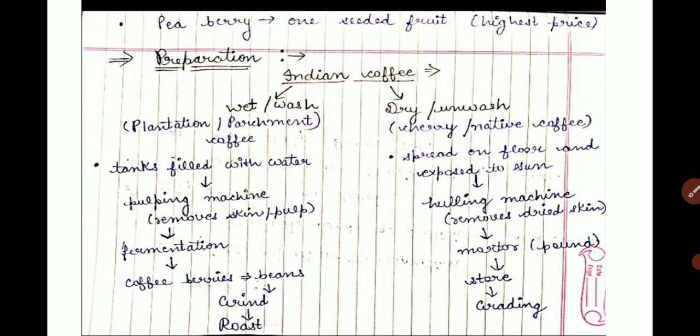For the dry or unwash method: dry berries are spread on the floor and exposed to sun. The outer skin, parchment cover, and pulpy matter dry up to form a husk-like covering. The berries are then passed through hulling machines to remove the dried skin and pulp. Finally, the beans are pounded in a mortar to remove the parchment, and graded to form cherry coffee.